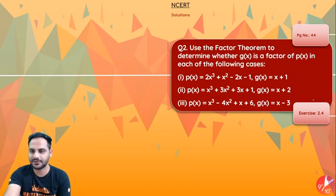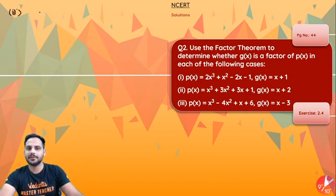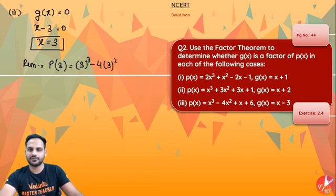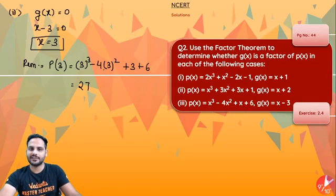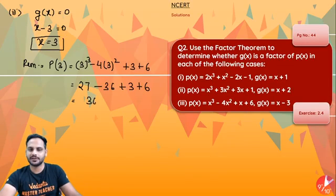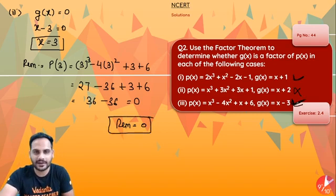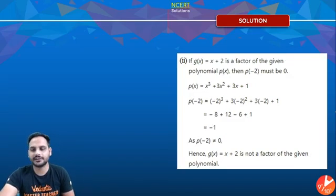For the third case, make g(x) = 0: x - 3 = 0, so x = 3. The remainder equals the value of p(x) at x = 3: 3³ - 4(3²) + 3 + 6 = 27 - 36 + 3 + 6 = 0. The remainder is 0, so g(x) is a factor in the third case. Summary: Case 1 — factor; Case 2 — not a factor; Case 3 — factor.